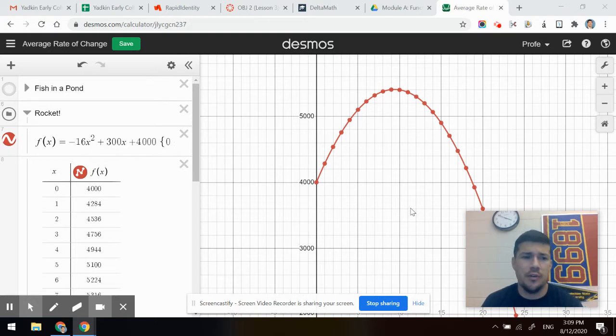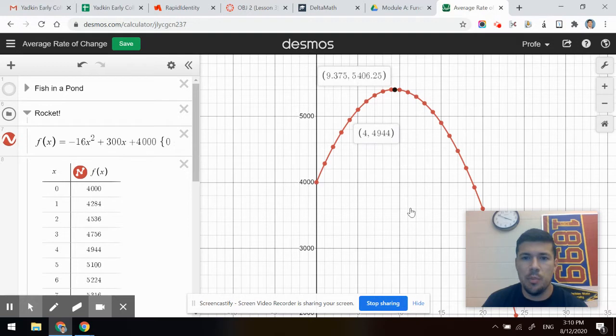We're going to talk about two more ways of finding average rate of change. So we looked at the tables. I wanted to first very quickly say if you can find the average rate of change with the table, then you can find the average rate of change with the graph. So let me just pick two points at random right here.